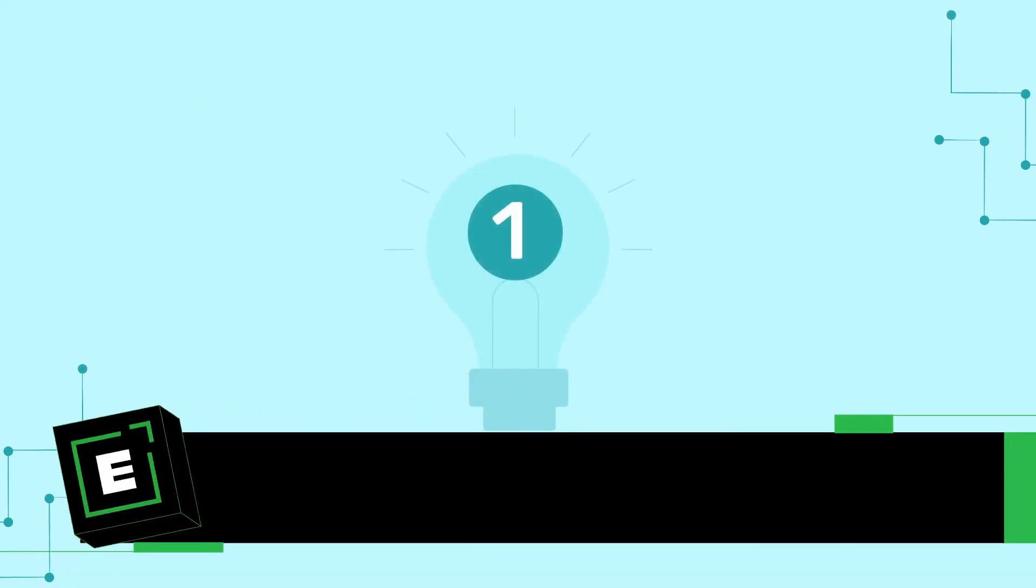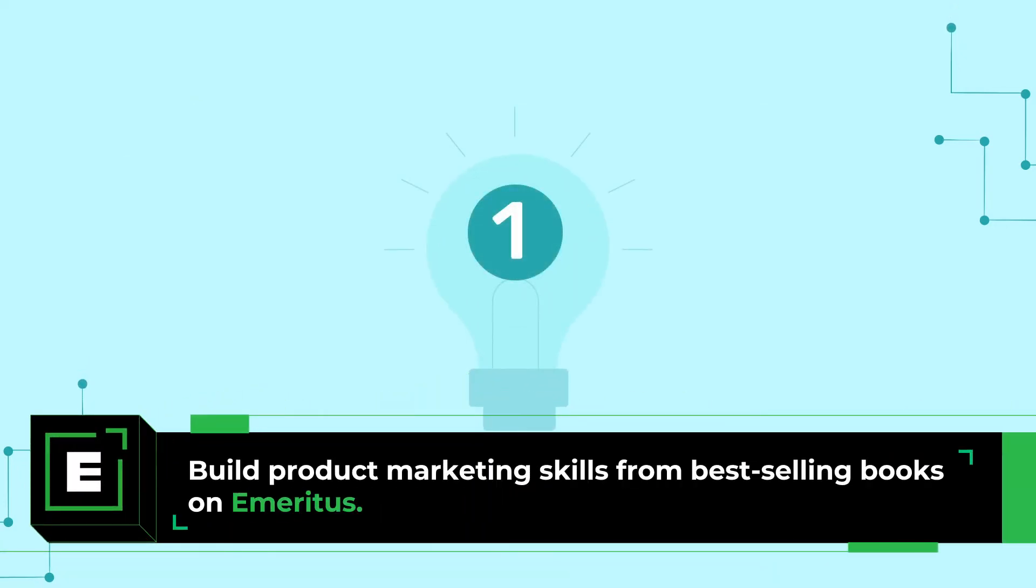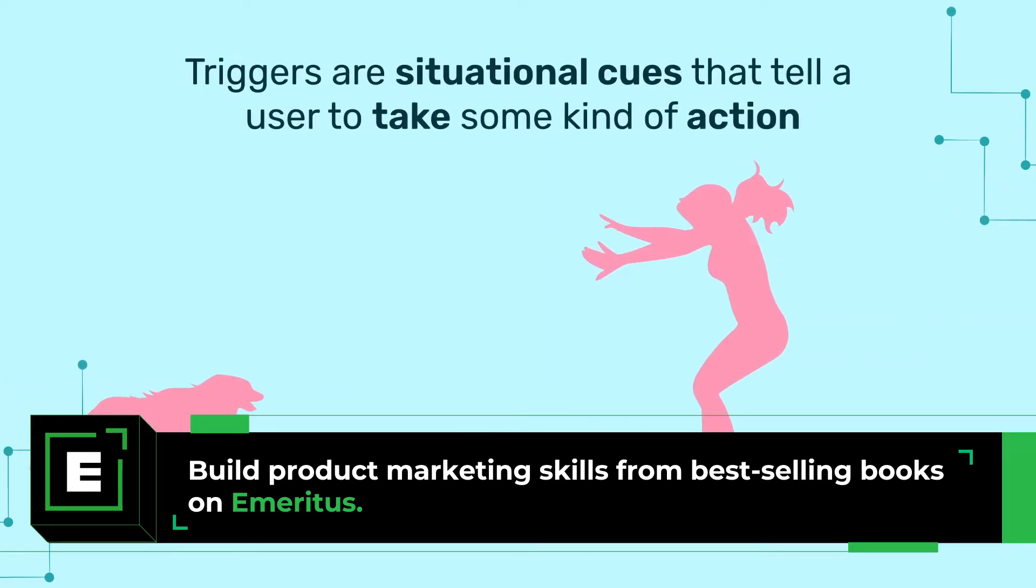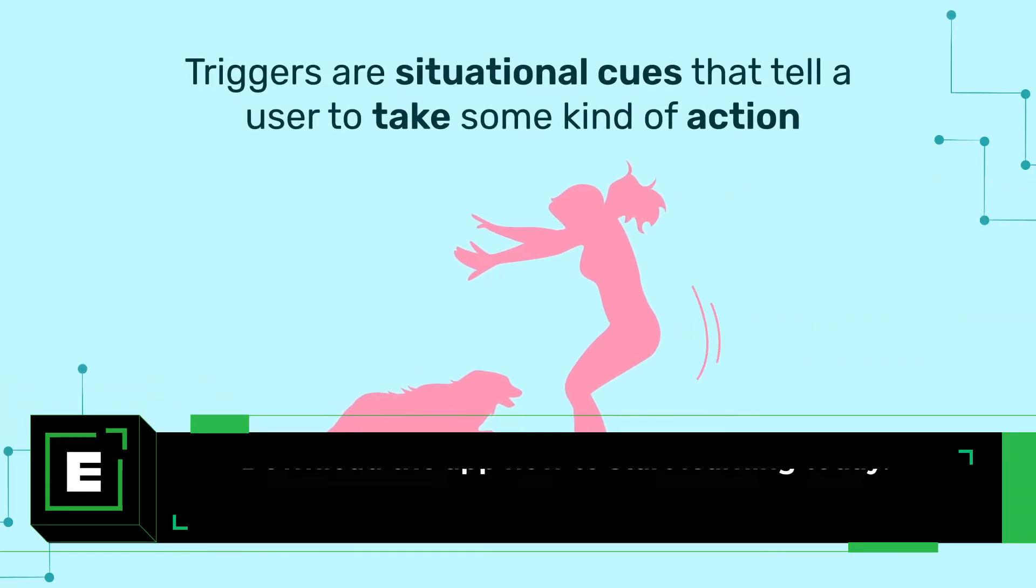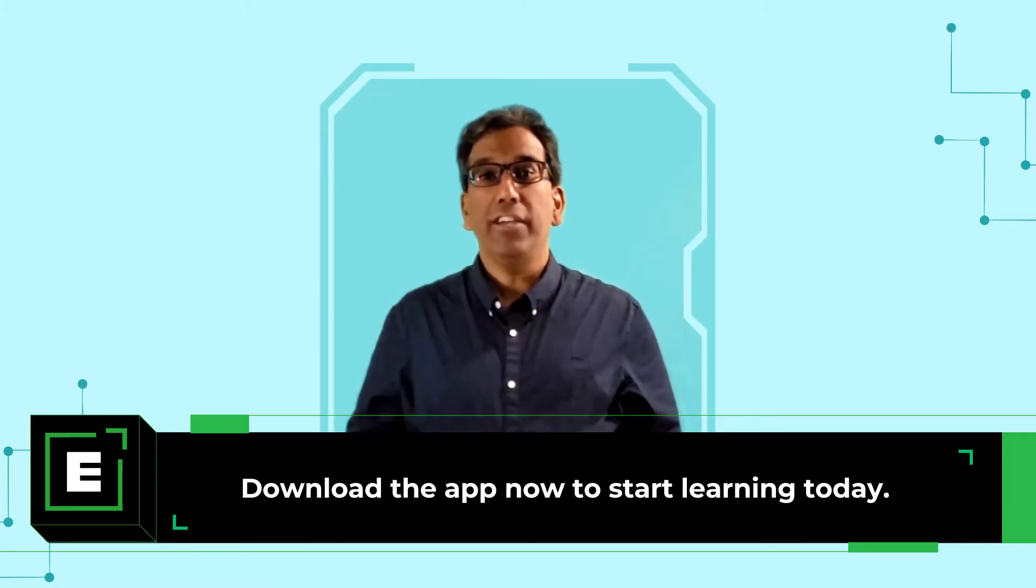The first step in using the Hook Model to create a habit-forming product is to exploit a trigger. Triggers are situational cues that tell a user to take some kind of action. Triggers are the foundation on which habits are built.